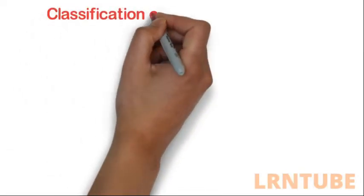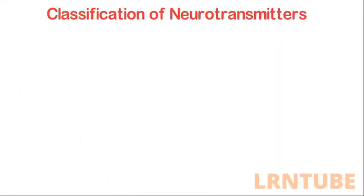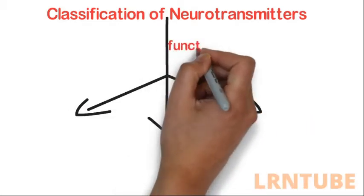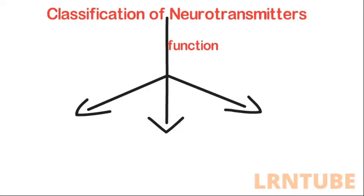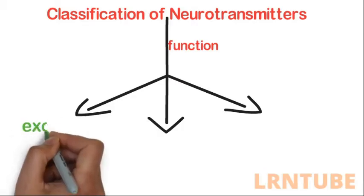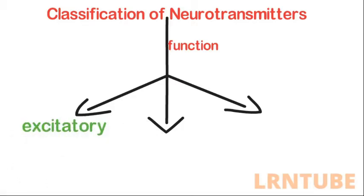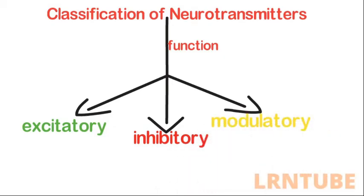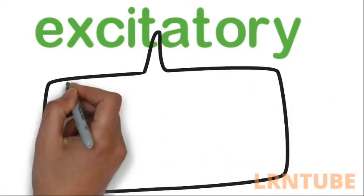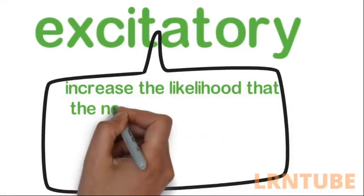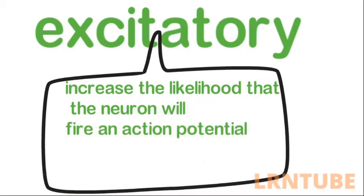This leads us to the classification of neurotransmitters. Neurotransmitters can be classified by their function into three categories, based on their influence on a neuron. We have excitatory neurotransmitters, inhibitory neurotransmitters, and modulatory neurotransmitters. Excitatory neurotransmitters increase the likelihood that a neuron will fire an action potential — basically, they encourage a target cell to take action.